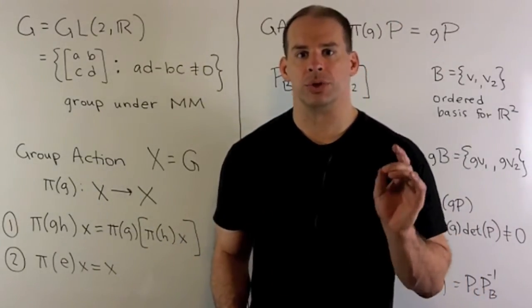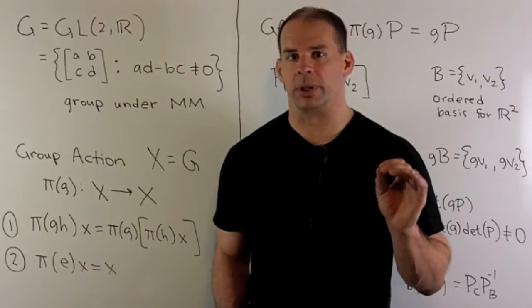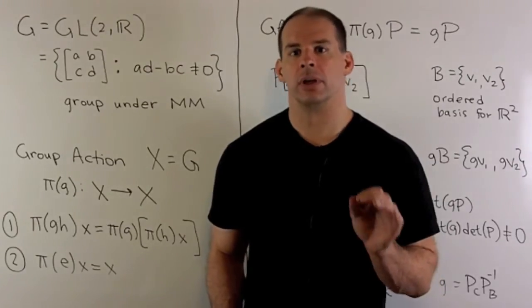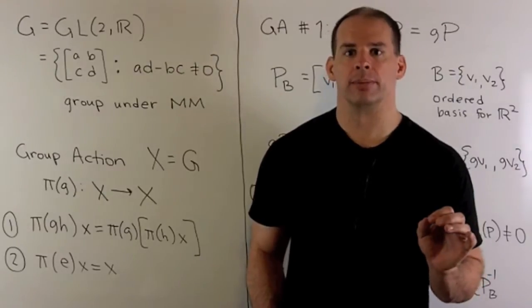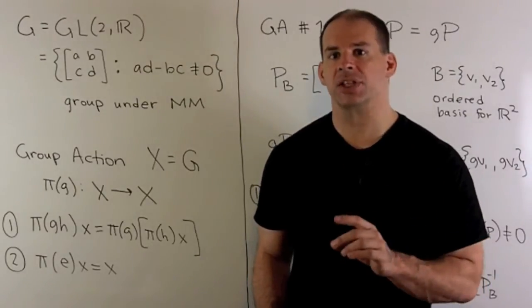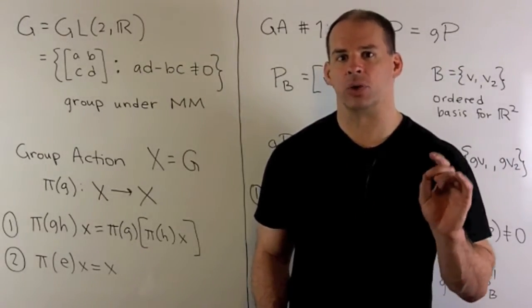Part one: we show that G is a group under matrix multiplication. For this part, we're going to consider group actions of G. In this case, we want the space X to be the group G itself.